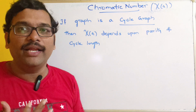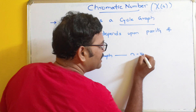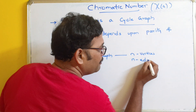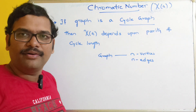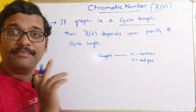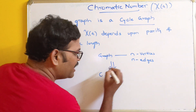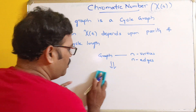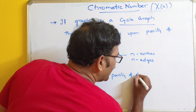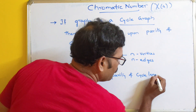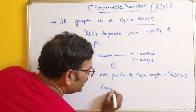A graph is called a cycle graph if it is drawn with n vertices and n edges — that is, the number of vertices and edges are equal. In such a cycle graph, if the cycle length has odd parity, then the chromatic number is three.